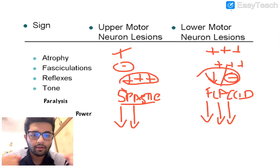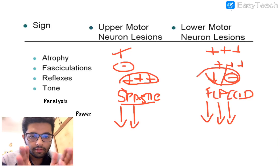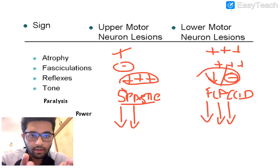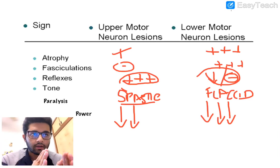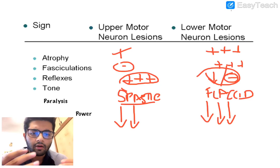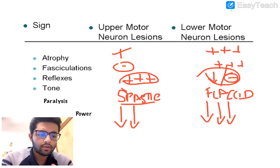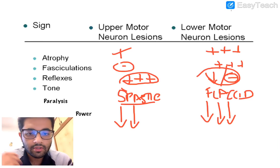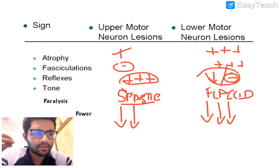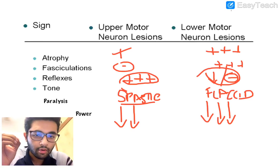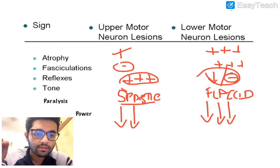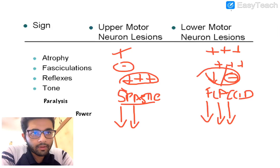An easy way to remember: think of the UMN or higher centers as a parent and the LMN as a child. The parent controls the child, stopping unnecessary hyper behavior. When the parent is home the child is well-behaved; when the parent goes out the child is hyper, jumping everywhere. That is exactly how the lower motor neuron begins to behave when the UMN influence is removed.